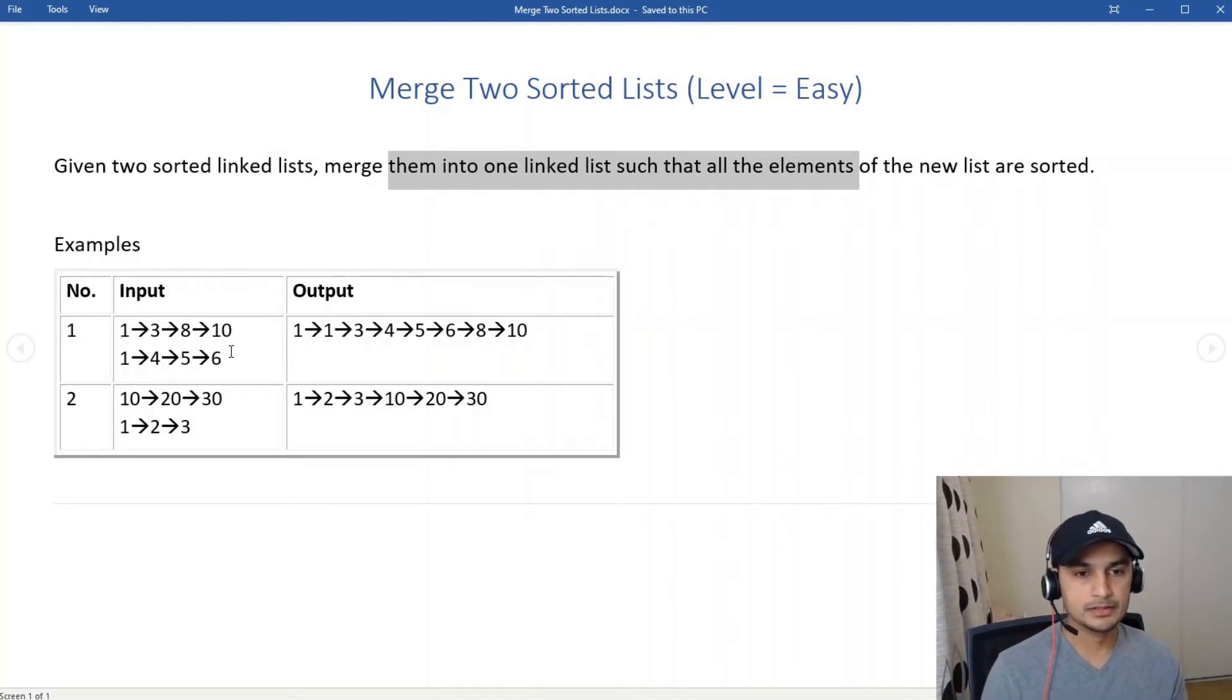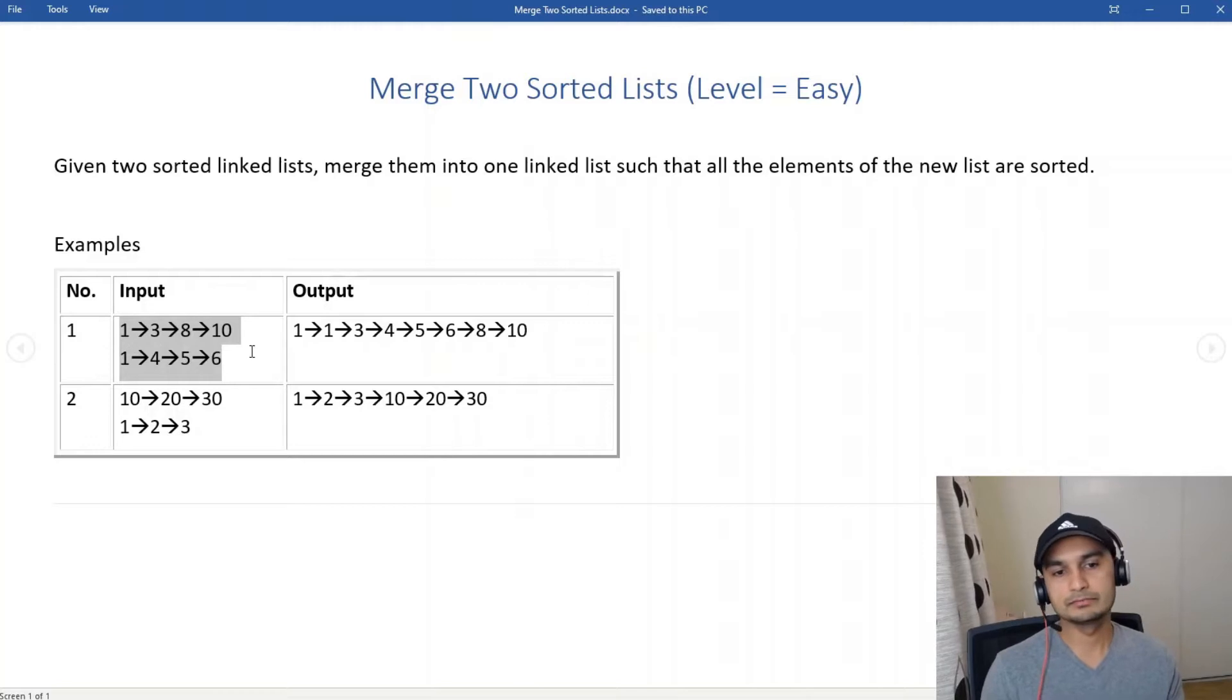Our examples are straightforward and self-explanatory. List one is 1, 3, 8, 10. List two is 1, 4, 5, 6. So our merged list is 1, 1, 3, 4, 5, 6, 8, 10.